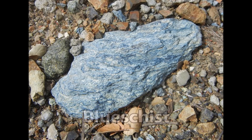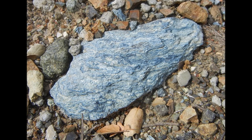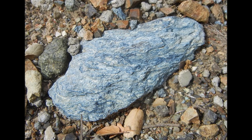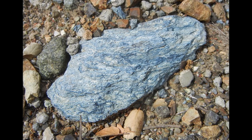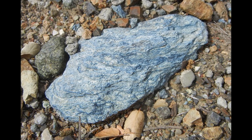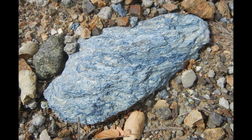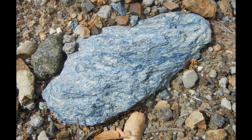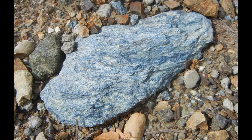Blueschist signifies regional metamorphism at relatively high pressures and low temperatures, but it isn't always blue or even a schist. High pressure, low temperature conditions are most typical of subduction, where marine crusts and sediments are carried beneath a continental plate. Changing tectonic motions allow sodium-rich fluids to marinate the rocks. Blueschist is called a schist because all traces of original structure in the rock have been wiped out along with the original minerals, and a strongly layered fabric has been imposed.